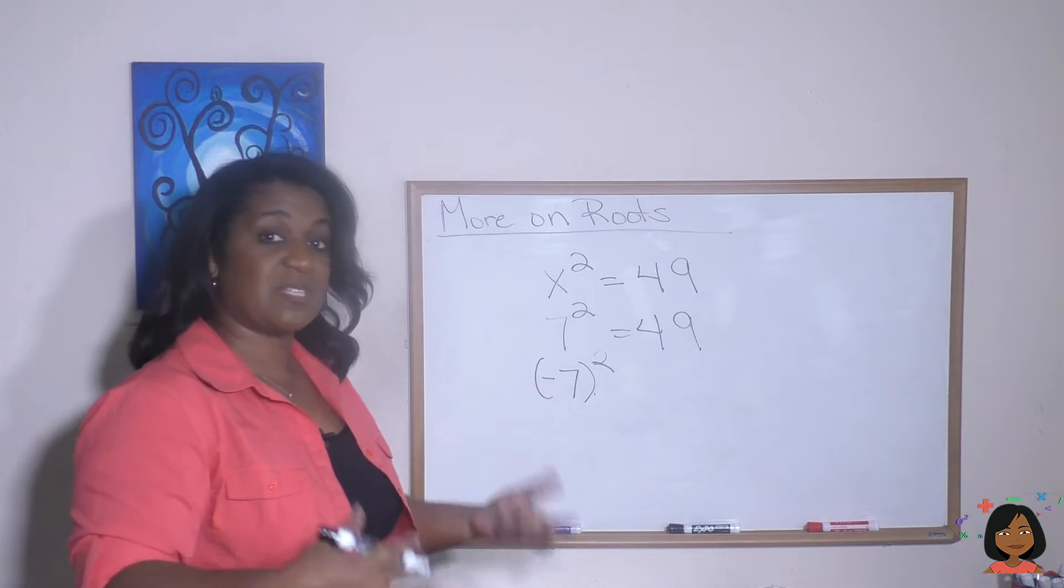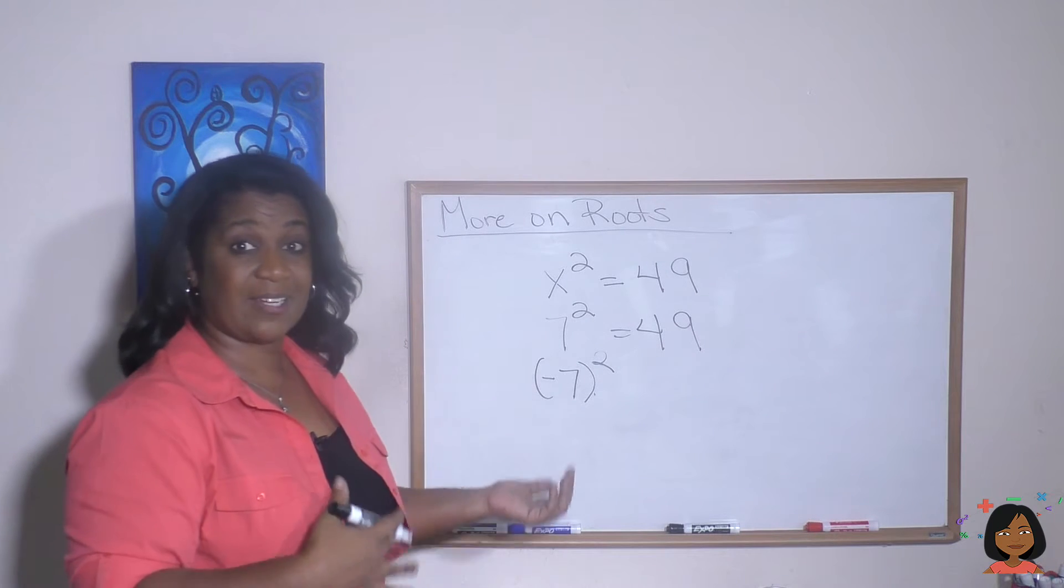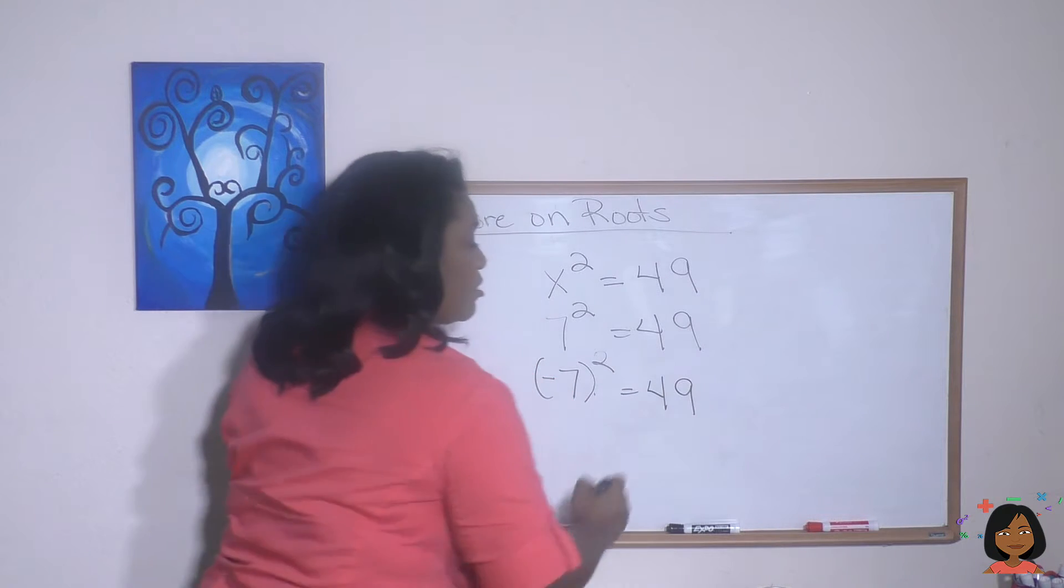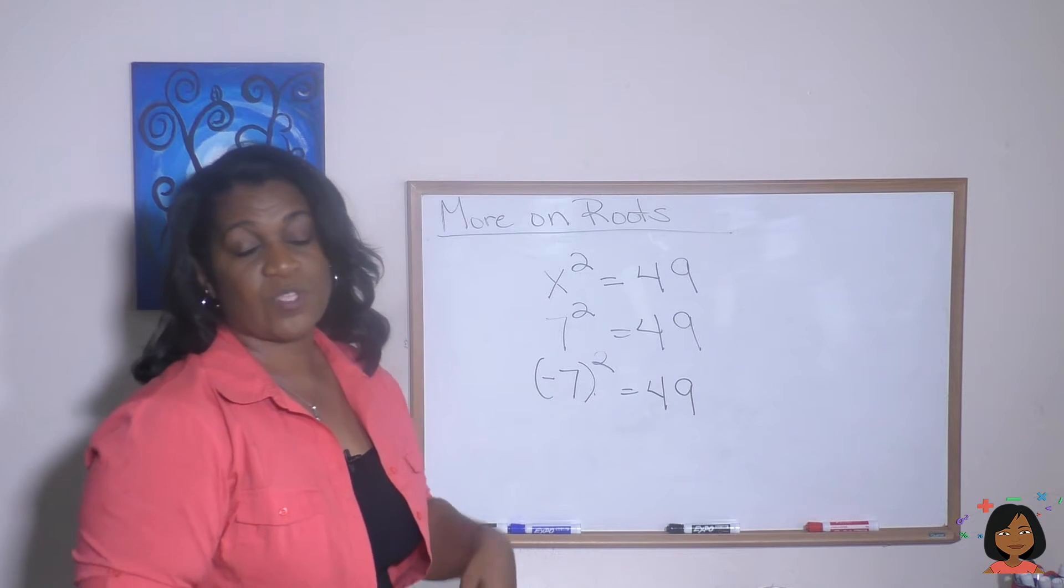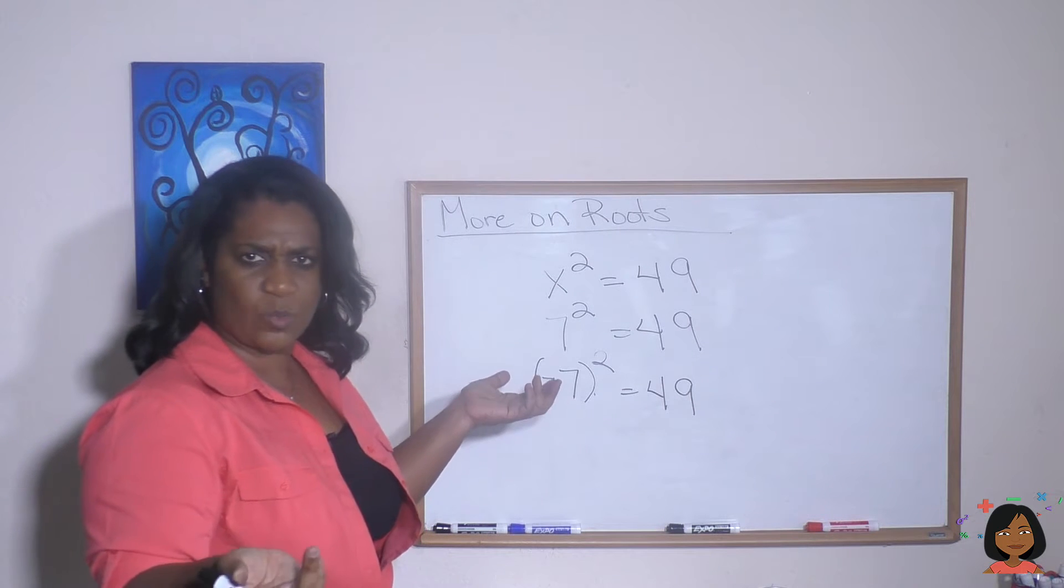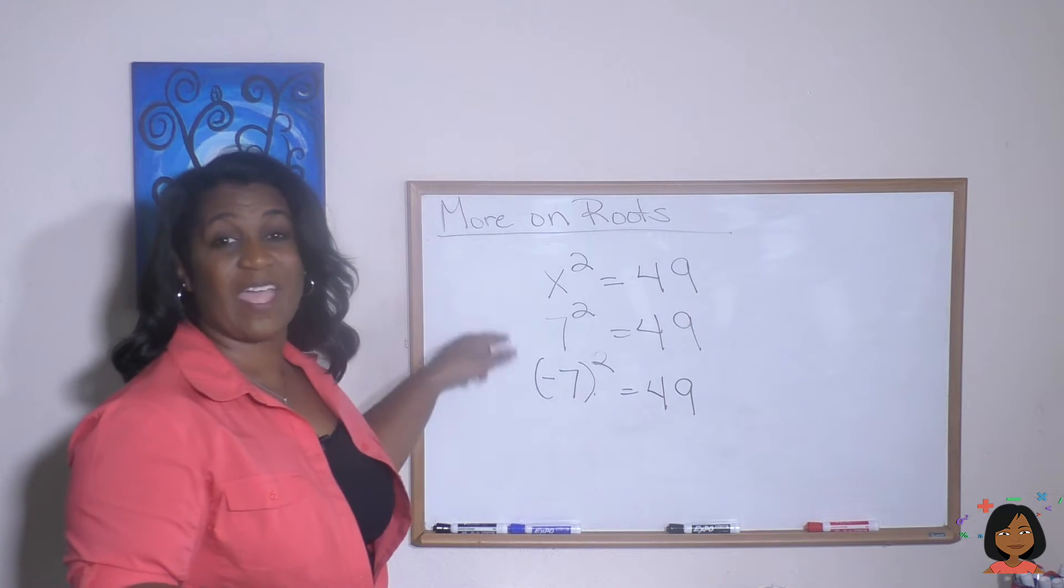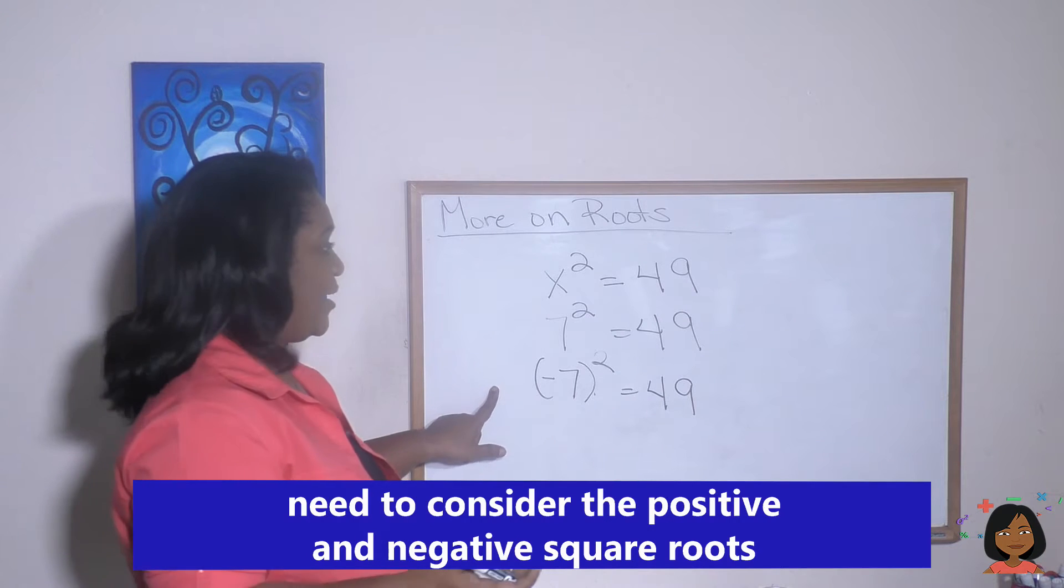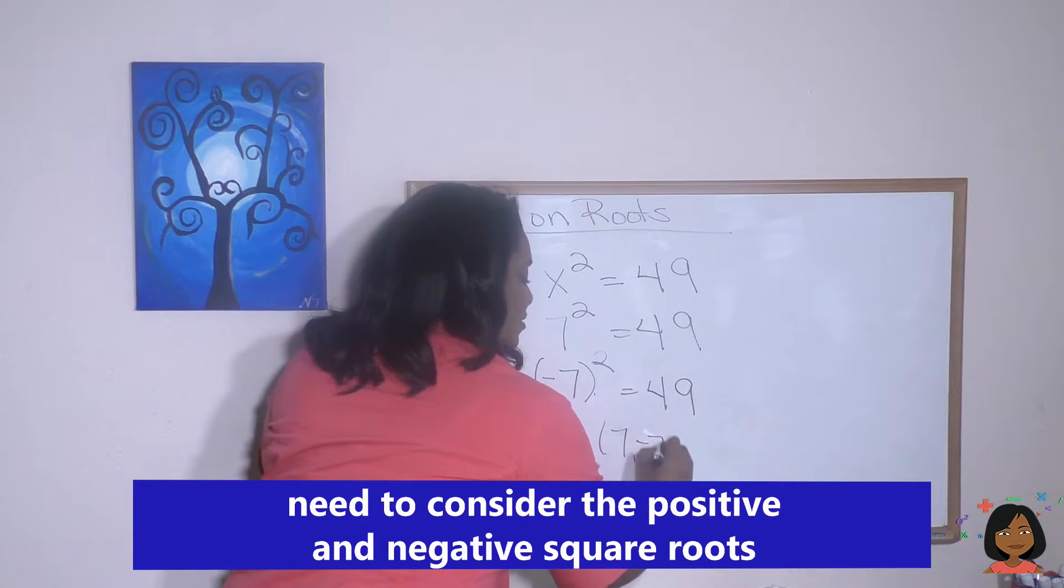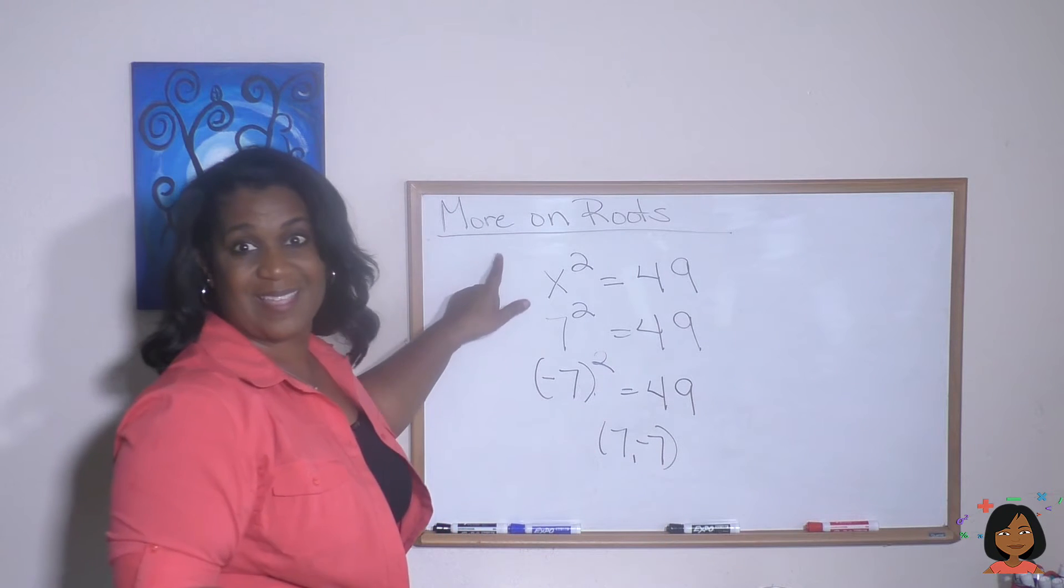Think about it. Negative 7 times a negative 7. We know a negative times a negative is a positive. So that is also 49. So when we're asked for the square roots of things, when we ask for what are the square roots, we have to give a positive and a negative answer.